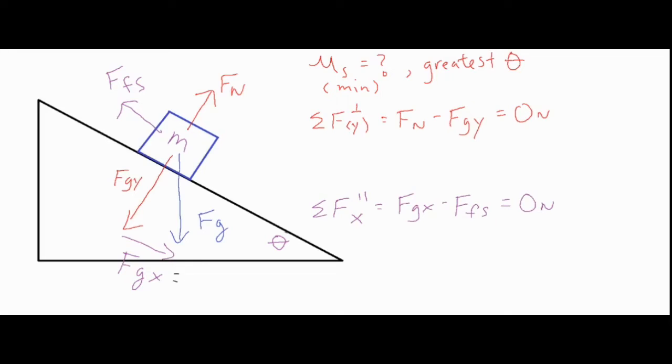Now what we can do is we can do some substitutions and we can make Fgx equal to mg sine theta, Fg is just regular mg, and then Fgy is mg cosine of theta.